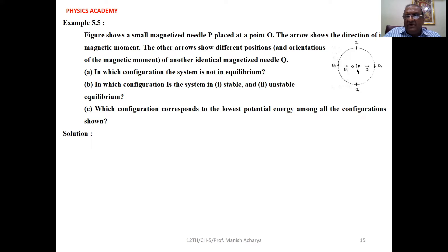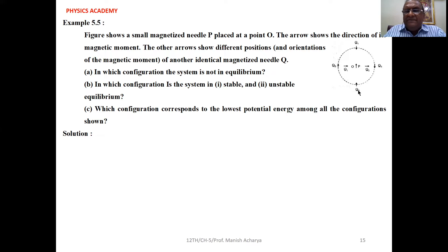Here we have one dipole P, and another dipole Q is placed at six different positions: Q1, Q2, Q3, Q4, Q5, and Q6. For this particular arrangement, we have to answer these questions.